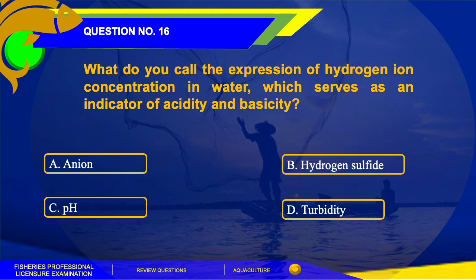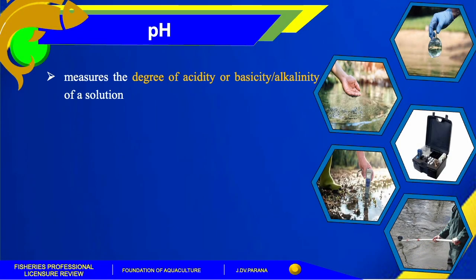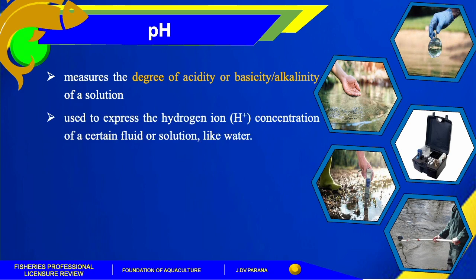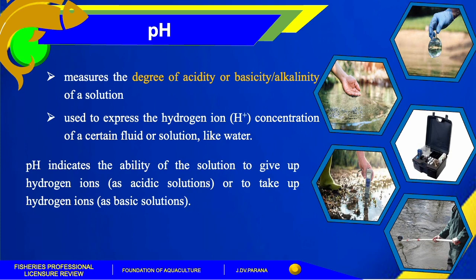The correct answer for this question is letter C, pH. The pH measures the degree of acidity or alkalinity of a solution. It is used to express the hydrogen ion concentration of a certain fluid or solution like water. The pH indicates the ability of the solution to give up hydrogen ions as acidic solutions, or take up hydrogen ions as basic solutions.